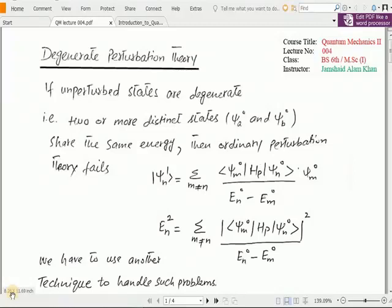In degenerate perturbation theory, we know that in degenerate states two or more states correspond to the same energy level. If unperturbed states are degenerate, we can say that two or more distinct states, let's say ψ_a^0 and ψ_b^0, share the same energy.